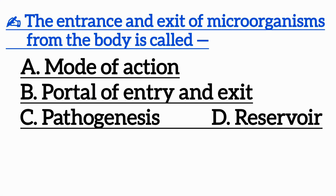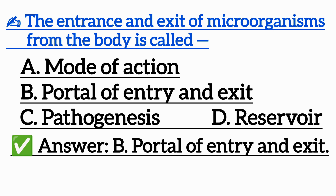Question 1: The entrance and exit of microorganisms from the body is called — Option A: Mode of action, Option B: Portal of entry and exit, Option C: Pathogenesis, Option D: Reservoir. Correct answer is Option B: Portal of entry and exit.